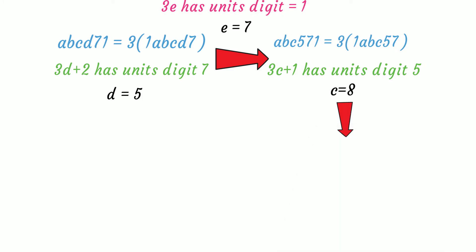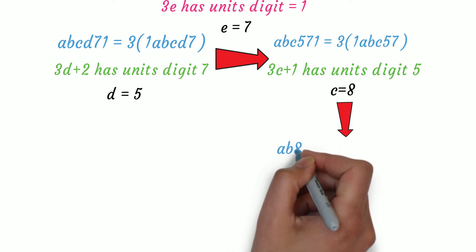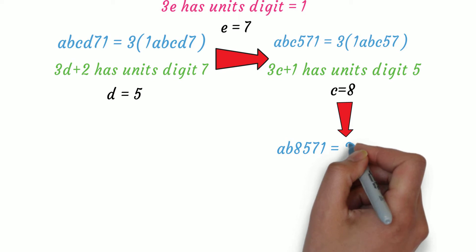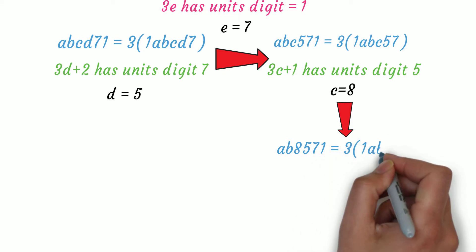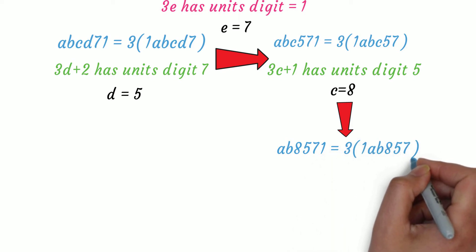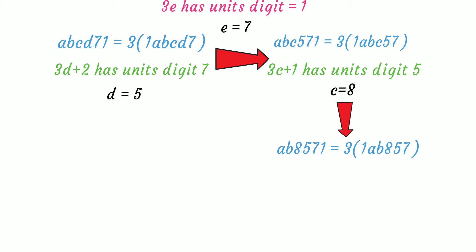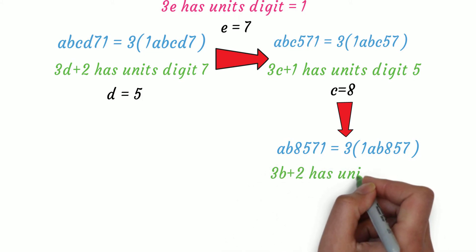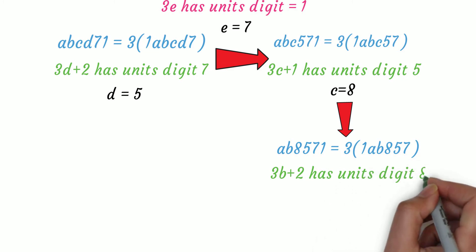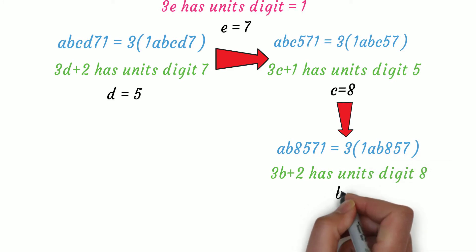Substituting it back, we get ab8571 equals 3 times 1ab857. Now, 3b plus 2, 2 from 25, has unit digit 8. This gives us b equals 2.